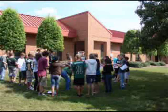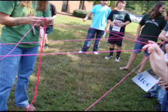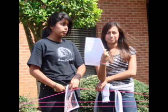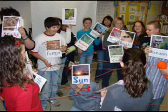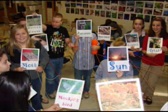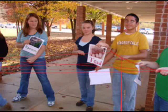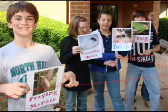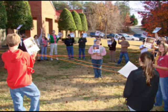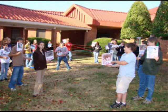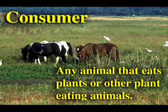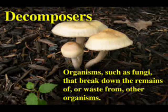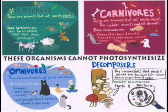Do you know why there are more herbivores than carnivores and more producers than consumers? In a food chain, energy is passed from one link to another. When a herbivore eats, only a fraction of the energy that it gets from the plant food becomes new body mass. The rest of the energy is lost as waste or used up by the herbivore to carry out its life processes, like movement, digestion, and reproduction. Therefore, when the herbivore is eaten by a carnivore, it passes only a small amount of total energy that it has received to the carnivore.